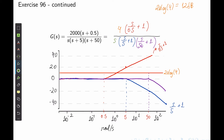The last element is the pole at the origin. This adds a constant slope of negative 20 dB per decade everywhere on the Bode plot. At frequency 1, 20 log of 1 is 0, so we start at 0. At 10 radians per second the magnitude should be negative 20, and at 100 it should be negative 40. Going back to lower frequencies: at 0.1 radians per second we should be at 20 dB, and at 0.01 we should be at 40 dB. This is the constant slope created by 1/s.